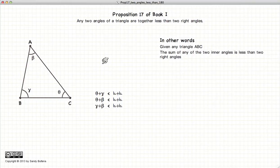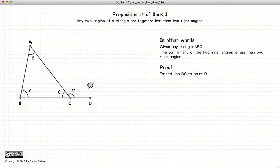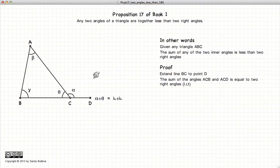So we're going to demonstrate this first by extending the line BC to point D, and now we have the angle alpha. Now we already know from Proposition 13 that alpha plus theta is equal to two right angles.